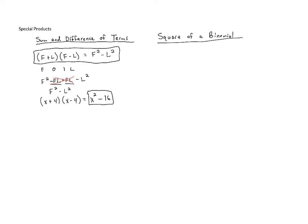So if we have a binomial like F plus L and we're squaring it. Well when we square something that's just multiplying it by itself. So this means F plus L times F plus L. Now again we can go through the process of foiling this out and we're going to do that once but then we're going to see that there's actually a shortcut. So let's foil it out.